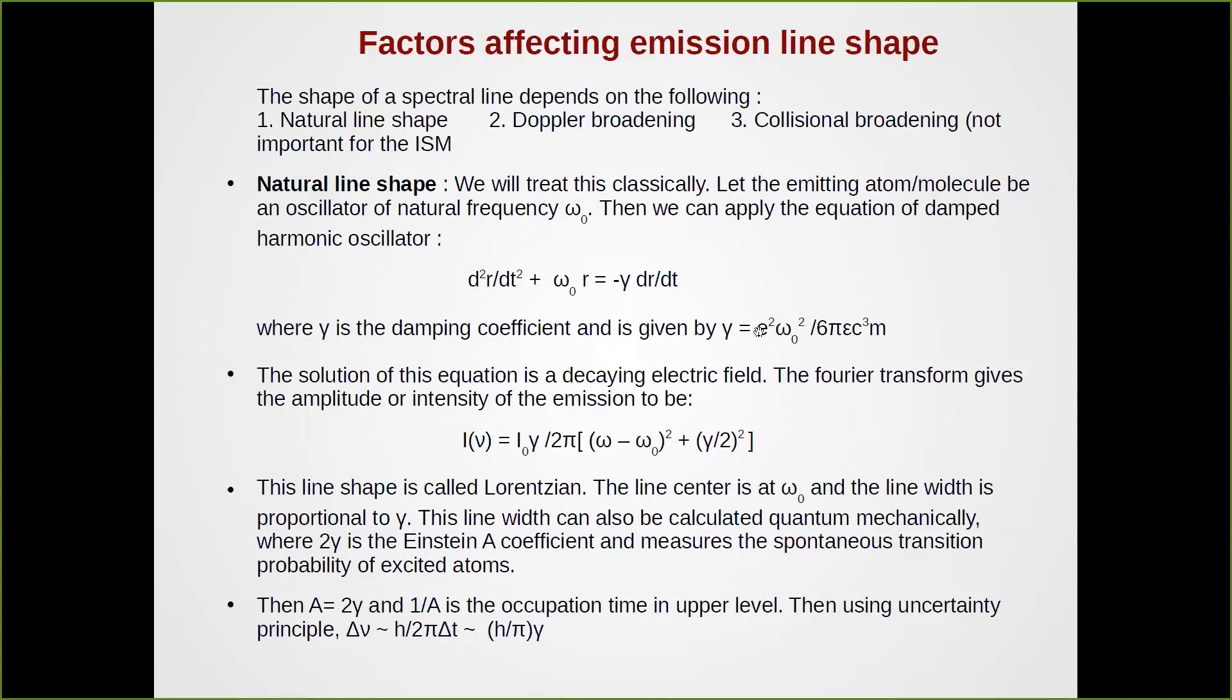We will not go into how this expression came—it is a quantum mechanical factor. You can go to Dyson and Williams or some other textbook and see how it is derived. We get finally from this expression the solution of a decaying electric field. The electric field will have an amplitude, and that amplitude E² will be proportional to the intensity of radiation that is emitted. That is given by this expression: I(ν) is given as I₀γ/(2π[(ω - ω₀)² + γ²/4]).